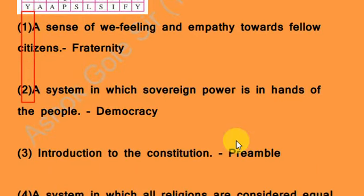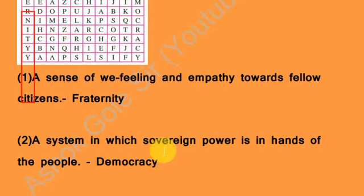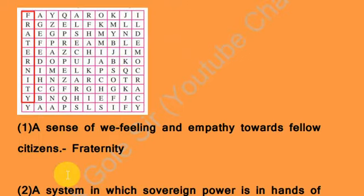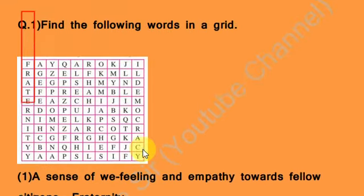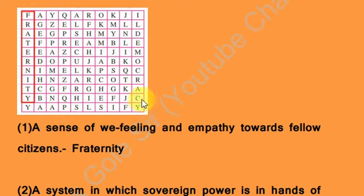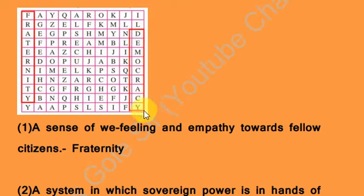The next clue is: a system in which sovereign power is in the hands of the people. The system where power is in the hands of the people is called democracy. We will find the word democracy right here in the grid — D, E, M, O, C, R, A, C, Y. Democracy.